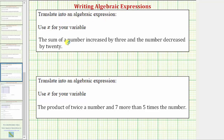We're going to translate the given statement into an algebraic expression, using the variable x for the unknown number. The given statement is: the sum of a number increased by three and the number decreased by twenty.